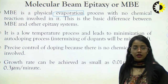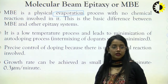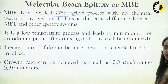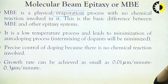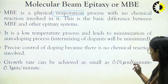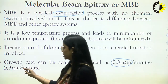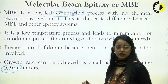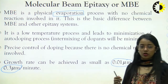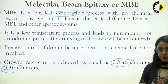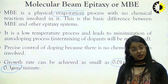There will be precise control of doping because no chemical reactions are involved in this process. The growth rate can be achieved as small as 0.1 to 0.3 micrometer per minute. This means the growth rate is very precise and we can have precision from 0.1 to 0.3 micrometer per minute.